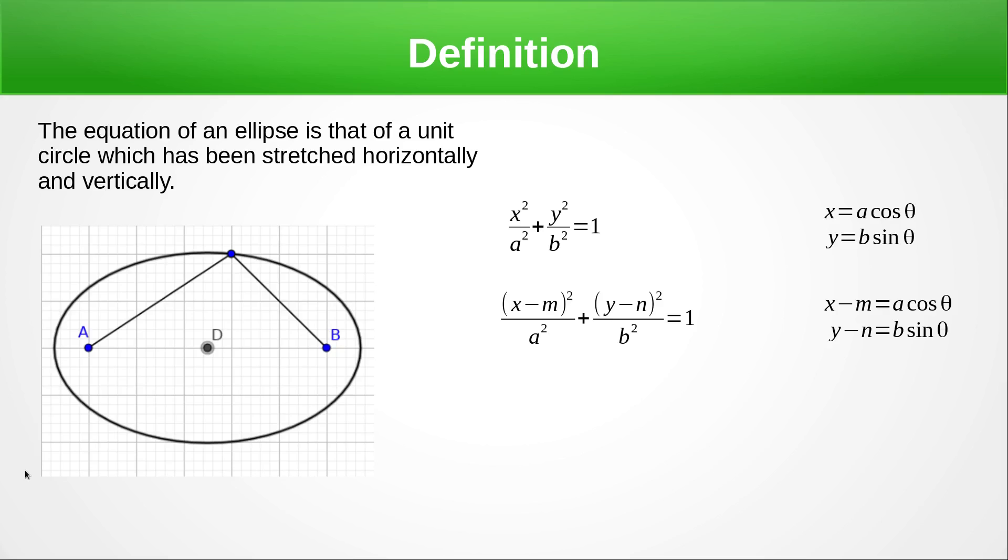So let's have a look at an ellipse. Here we've got an ellipse, it's got two foci and an ellipse can be described as the locus of points which are formed when the total distance from one foci to the locus back to the other foci is a constant length. I like to think of it as an equation of ellipse, it's just the unit circle which is x squared plus y squared equals one stretched horizontally and vertically and that's why we've got divided by the a squared and b squared.